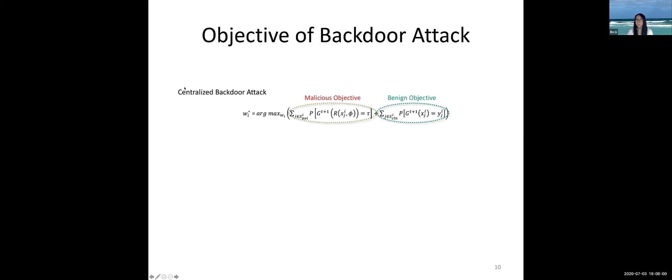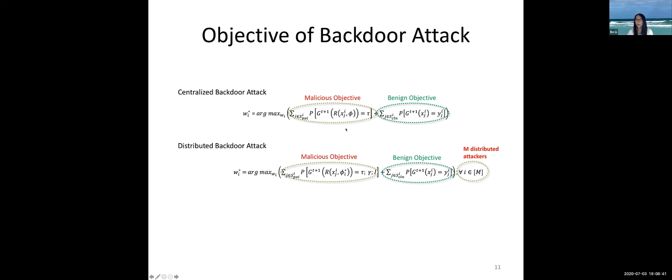We call the previous approach a centralized backdoor attack (CBA): one adversarial agent directly injects the full adversarial pattern to ensure the aggregated model misrecognizes instances into a pre-selected target. Of course, there is also a benign objective function to ensure the model works well on clean data so as not to draw attention. The new approach we call a distributed backdoor attack (DBA), where instead of injecting the whole designed backdoor pattern, each agent injects only a partial portion of the pattern.